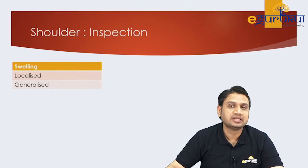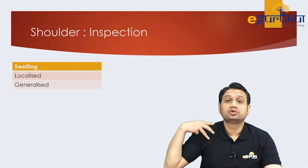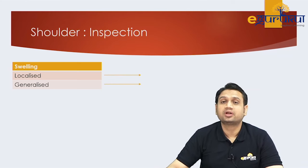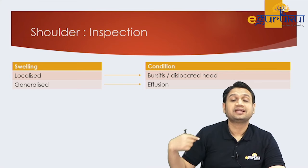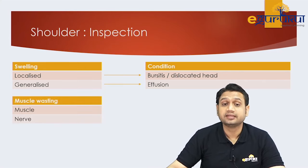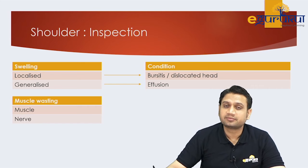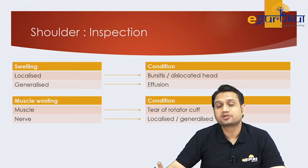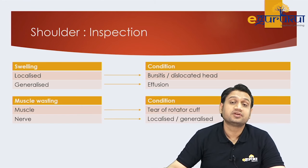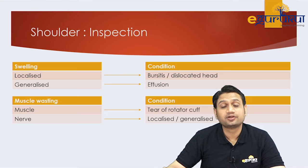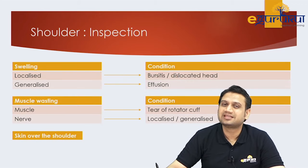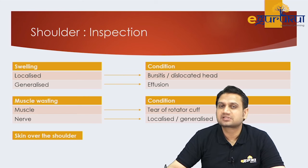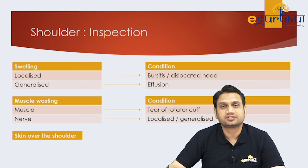Also assess for swelling — generalized swelling around the shoulder suggests effusion, while localized swelling suggests bursitis or dislocation. Look for muscle wasting: if it is due to a muscle cause, suspect rotator cuff tear; if neurological, assess whether it is localized or generalized. Always comment on the skin over the shoulder — any scar, sinus, previous surgery mark, or discoloration should be noted.